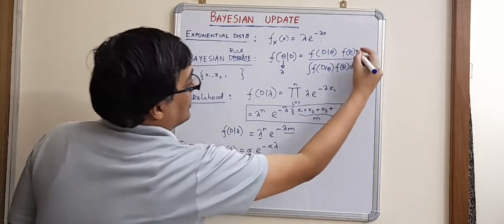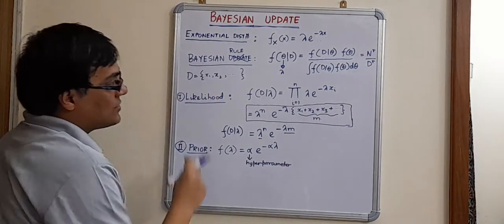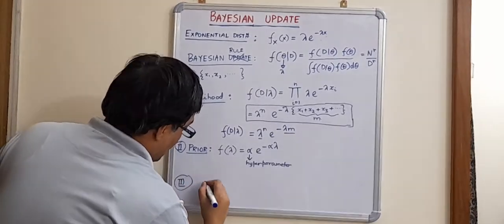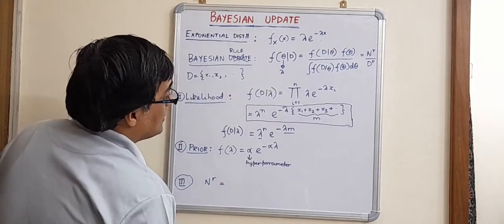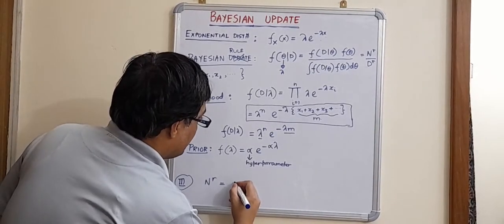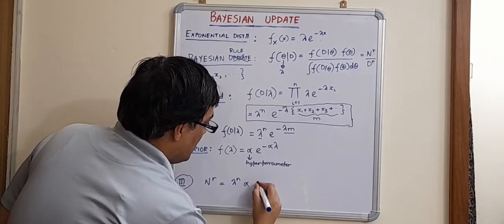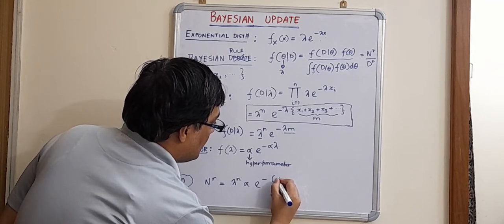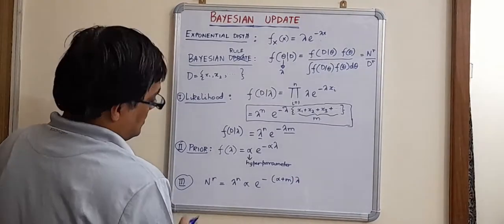So the numerator. So if I express this as numerator over denominator, the numerator simply becomes the product of the two. So the numerator, I would like to write as, it is very important to be systematic with this derivation. Otherwise, you can get lost very easily. So the numerator would be lambda n into alpha into e to the power minus alpha plus m into lambda. So this is the numerator.